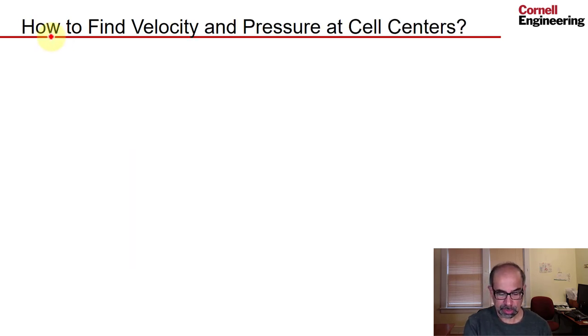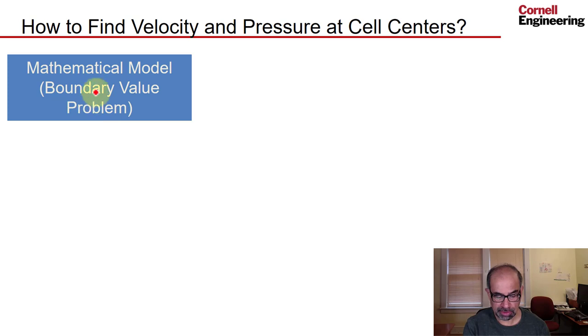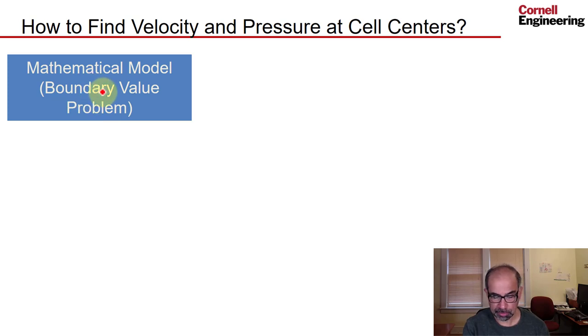Now that we have reduced the problem to finding the values at the cell centers, how to find the velocity and pressure at the cell centers? You start with your boundary value problem, the mathematical model, and you derive a system of algebraic equations in cell center values. And since we have 36 cell center values determined here, we would need to derive 36 algebraic equations. And you do that by performing a control volume balance for each cell.